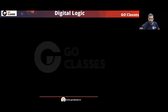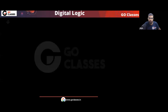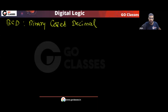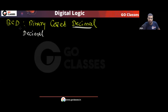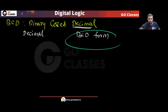First, let me explain what packed BCD is and what unpacked BCD is. We have already seen what BCD — binary coded decimal — means. In BCD, every decimal digit is encoded using a pattern of 4 bits, a binary pattern of 4 bits. The name itself tells you: binary coded decimal means every decimal digit is encoded in binary form.